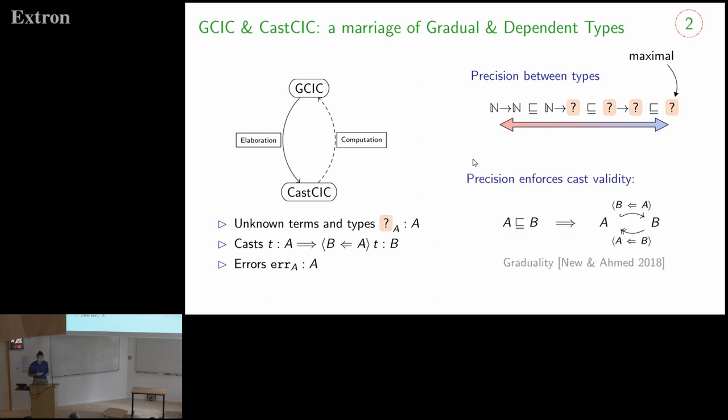So unknown is supposed to be maximal for this order. And the precision ensures that casts are valid, in the sense that if I have a type A, which is more precise than a type B, then I can embed through a cast operation elements of A into B, and the cast in the other direction will be a projection. And both of these functions will be some kind of Galois connection.